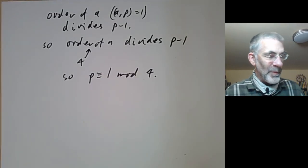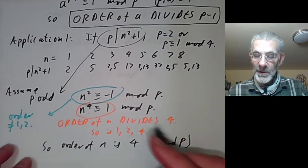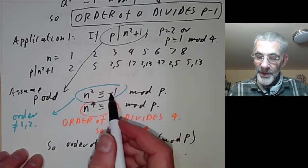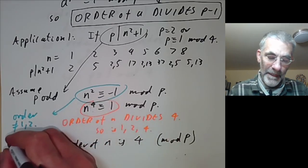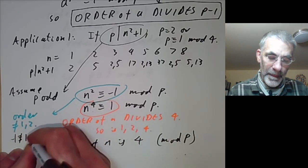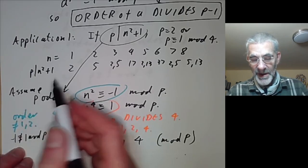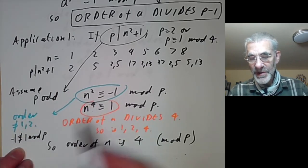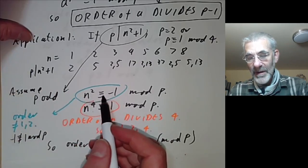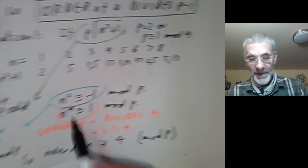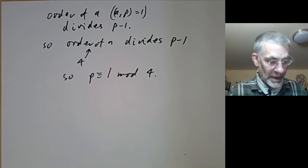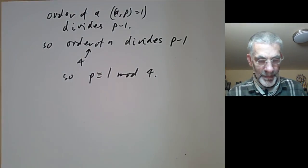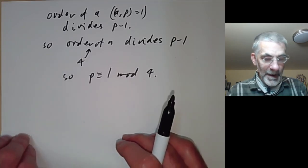We used the fact that p is odd because we need to know that -1 is not equal to 1 mod p, i.e., p is not equal to 2. If p were 2 then the order of n would be less than 4.